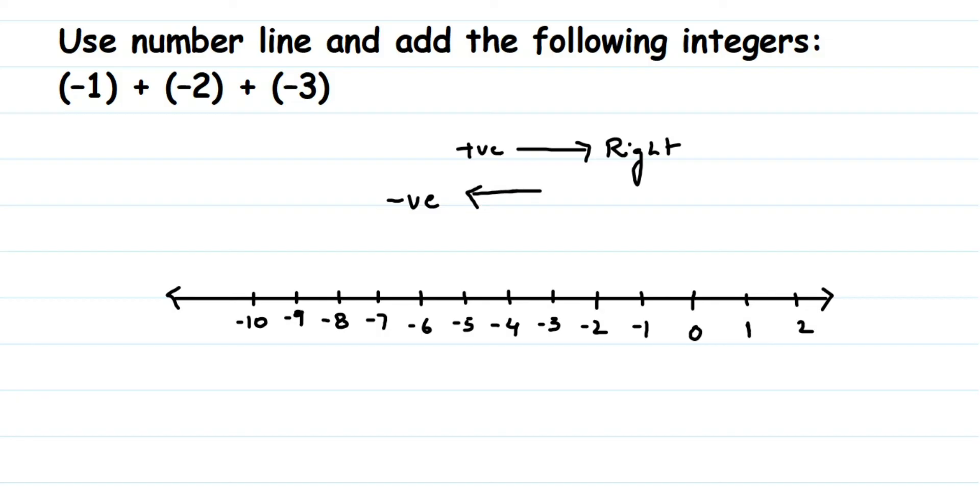Now, first number we have is minus 1. So let me locate minus 1, it is here. This is my first number, minus 1. To this I'm adding minus 2, and I'm adding a negative number, so I have to move towards the left side. How many numbers? Two numbers. So it will be 1 and 2. I'm going to stop here.